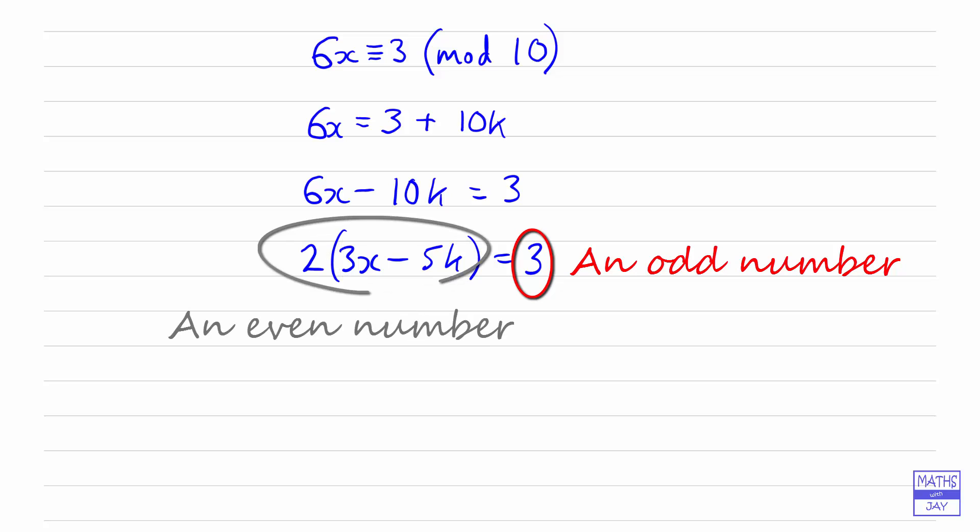Therefore, our linear congruence to start with is wrong. Therefore, we cannot solve the linear congruence. There is no value for x that will satisfy 6x is congruent to 3 mod 10.